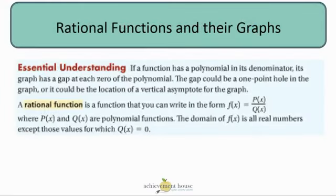First and foremost, if a function has a polynomial in its denominator, its graph has a gap at each zero of the polynomial. We should know by now that if the denominator of a fraction equals zero, then that fraction is undefined. Therefore, f(x) would be undefined if the denominator of a rational function is zero. So that gap could either be what we call a one-point hole or a vertical asymptote.